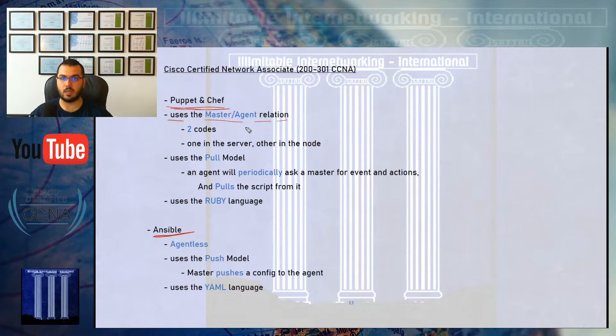Puppet and Chef both use the master-agent relation. It's about two codes of programming or scripting: one inside the server which is the controller, and the other inside the node which is the router. If there are 100 routers in your network, there are 100 agent codes. For every new device installed in your network, you need to install an agent script of Puppet or Chef inside this new device so it can talk to its master script up in the server or controller.